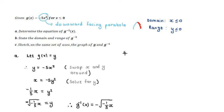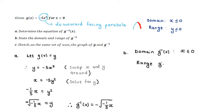Now for part B: state the domain and range of G inverse. The domain of G inverse is going to be the range of the original function — just change the variable — so X less than or equal to zero. The range of G inverse is going to be the domain of the original function — just change the variable — so Y less than or equal to zero. The domain is X values less than or equal to zero, meaning negative X values, so when we plug them in we get a negative times a negative, giving us a positive underneath the square root. So all is good.